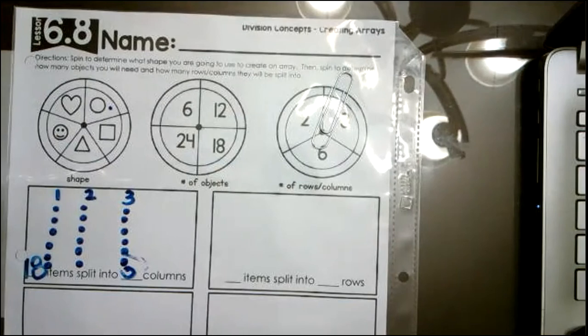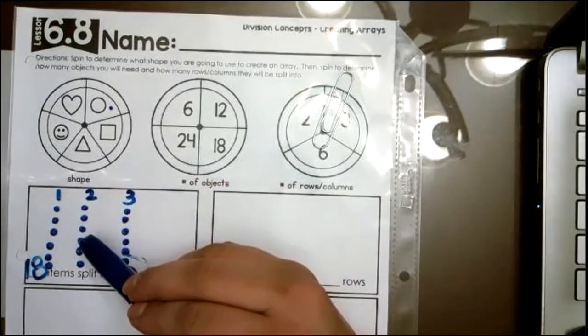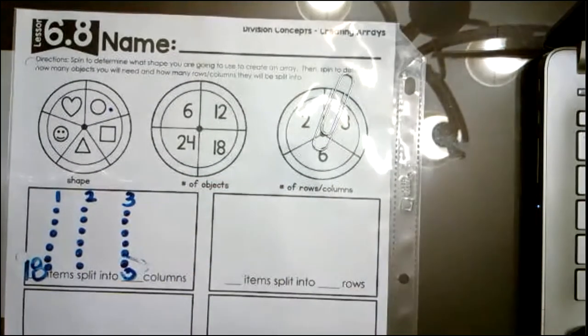So I have created my array. Who can tell me how many circles I have in each column? Right. We have one, two, three, four, five, and six. Great job, friends.